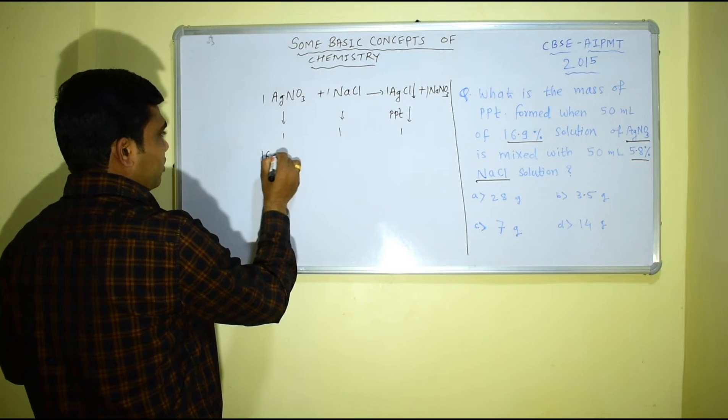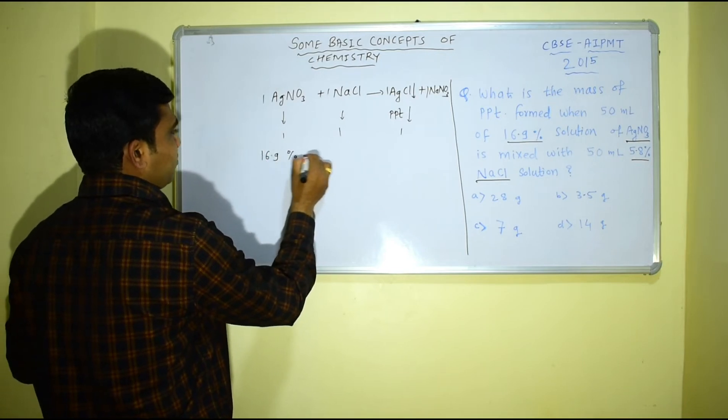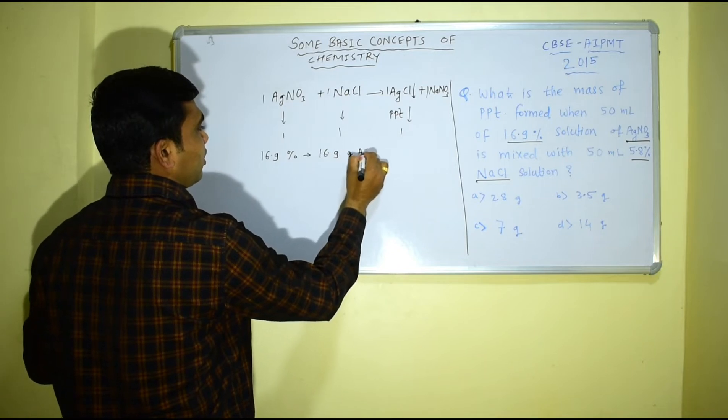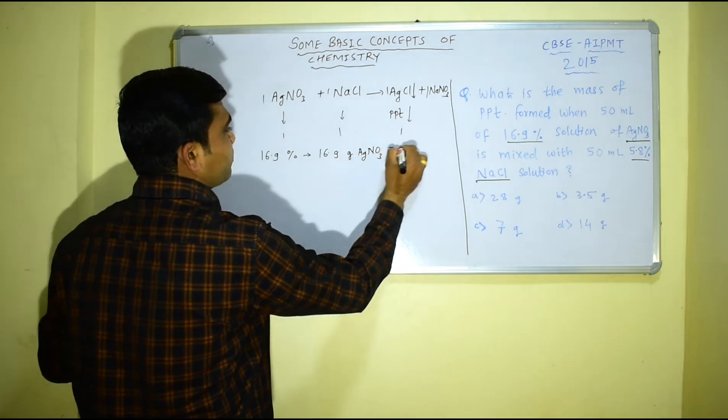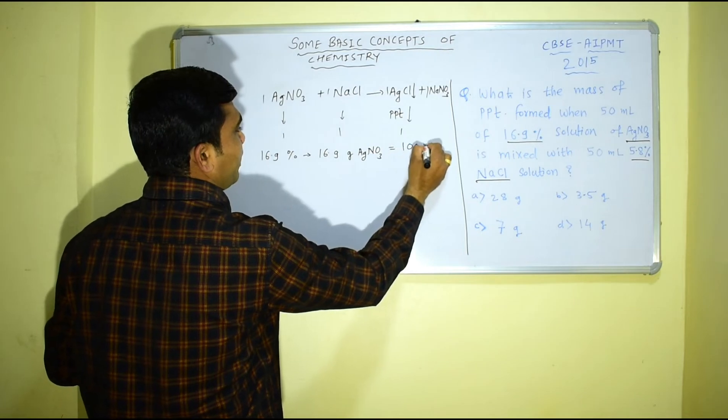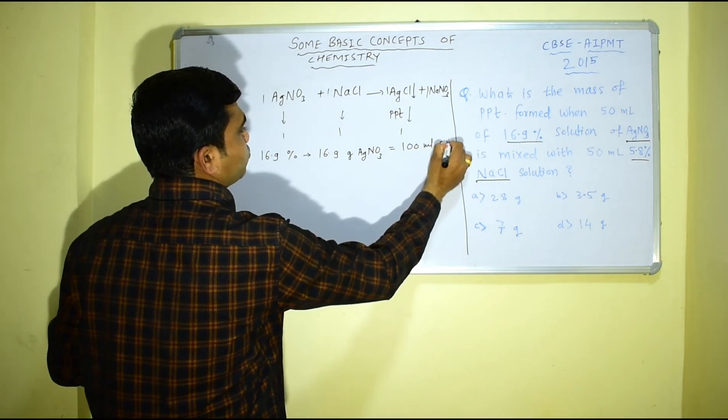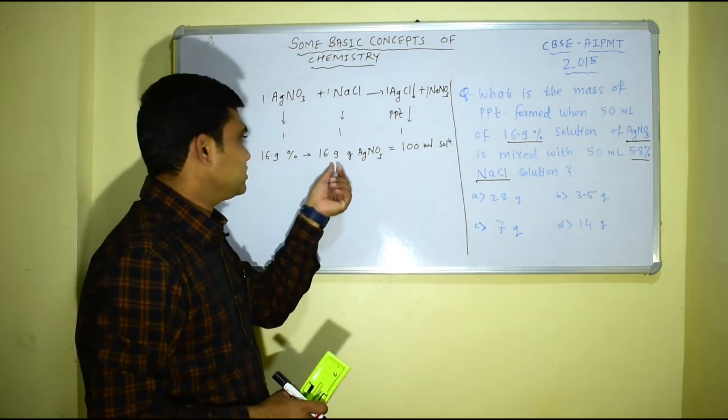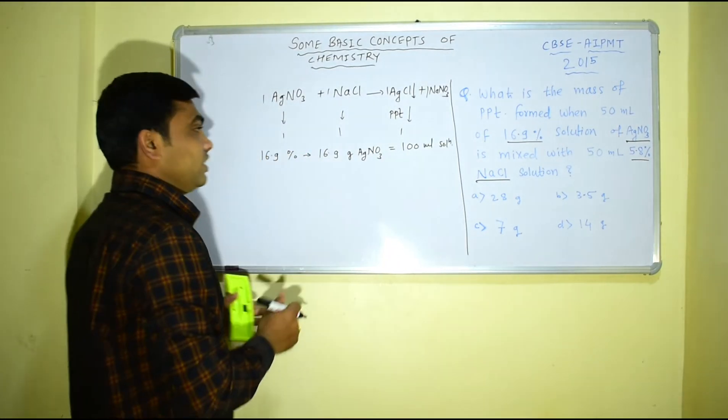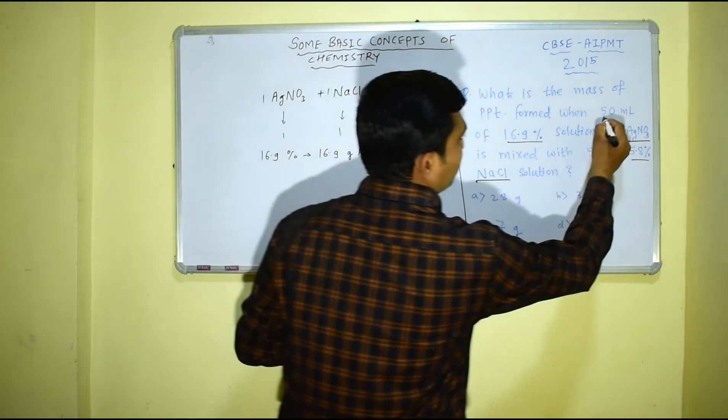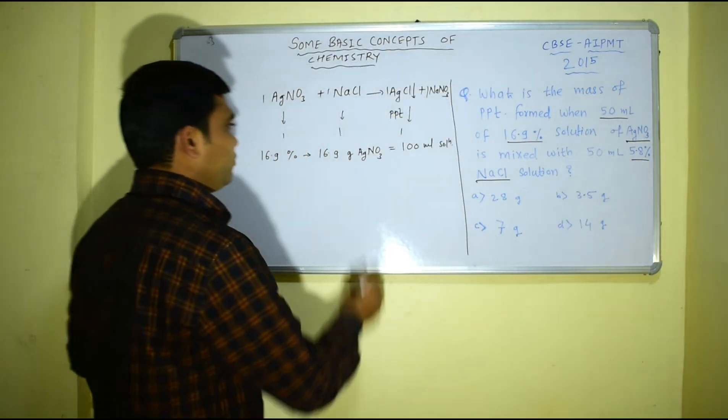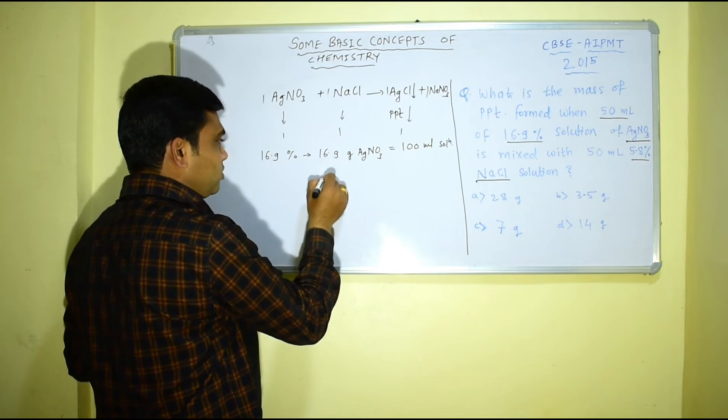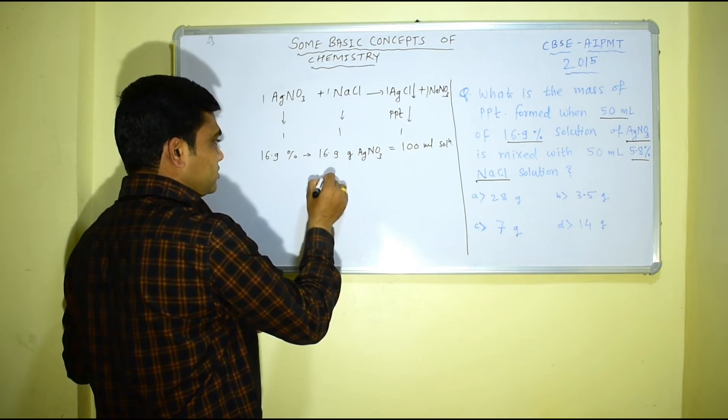Now 16.9 percent means what? 16.9 gram AgNO3 is present per 100 ml of solution. When I take solution which is 100 ml it contains 16.9 grams of silver nitrate, but they have given you 50 ml of solution only. Therefore if 100 ml contains this much amount then half of this, that is 8.45 gram silver nitrate will be present in 50 ml of solution.